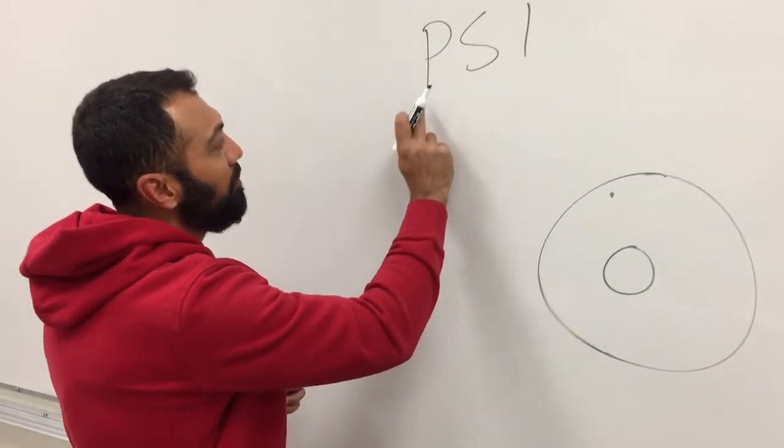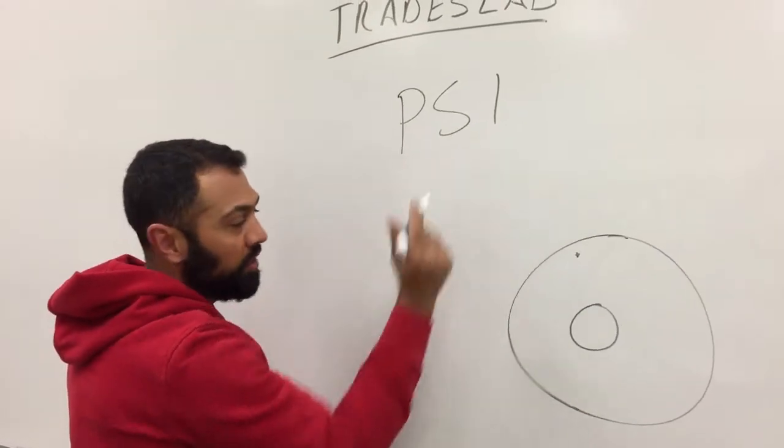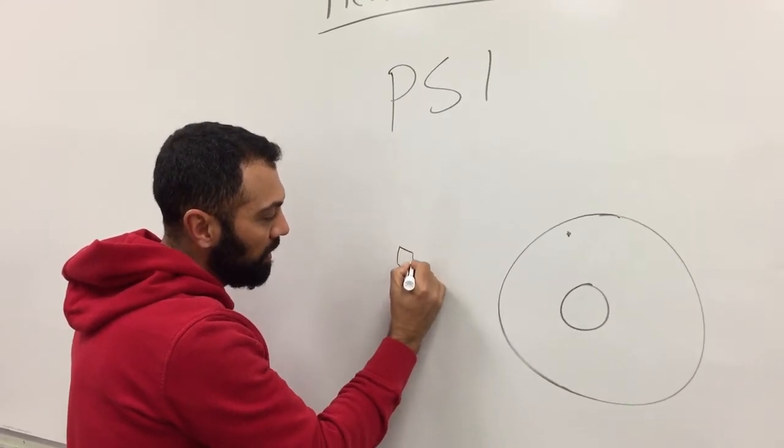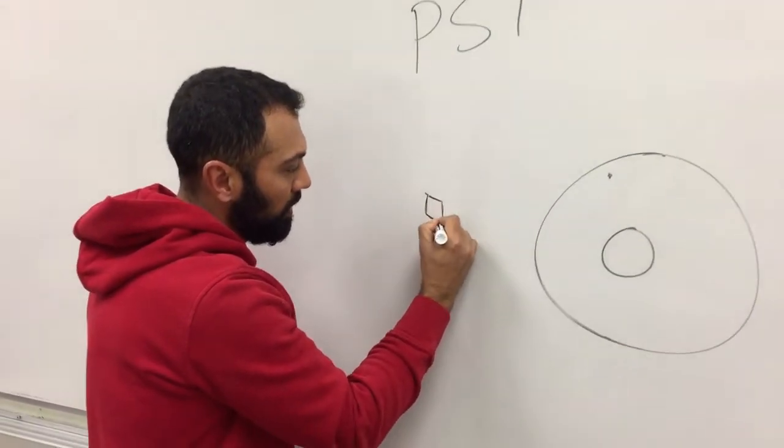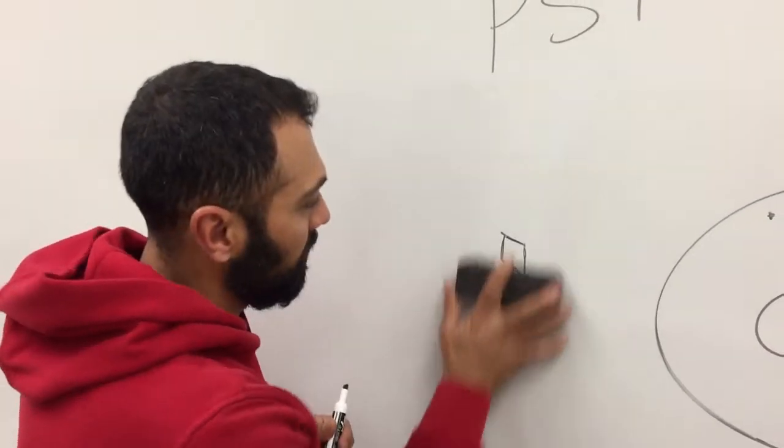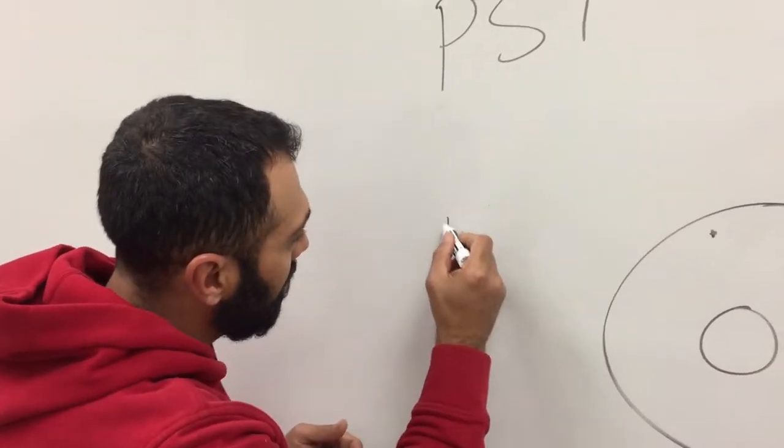Well think about it like this. Pounds per square inch. So if I was to look at a square inch, here's a square inch right there. Now, not the best square, sorry. Let's make it better. There we go.